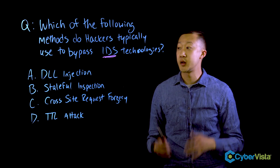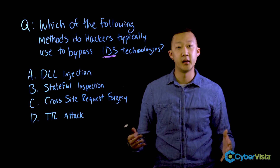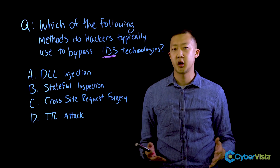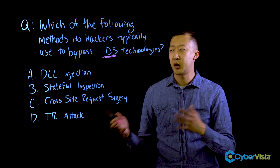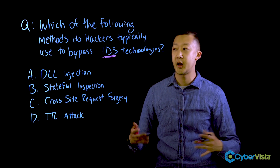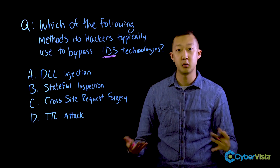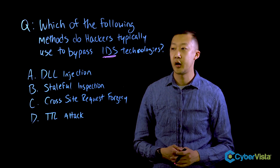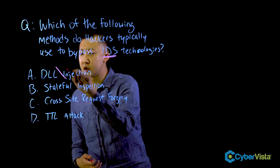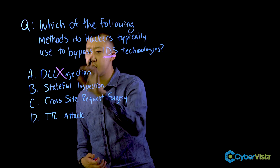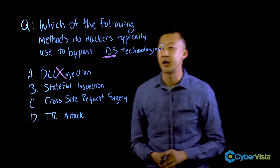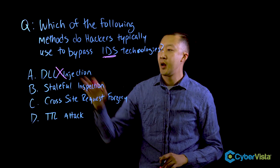Let's look at answer choice A: DLL injection. DLL injection, or dynamic link library injection, really has to do with programs and the different codes that are used. Since we're dealing with malicious code in the answer choice, it doesn't really have anything to do with the IDS.